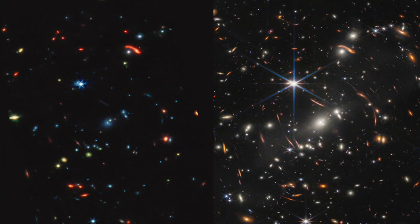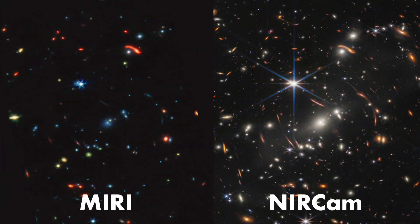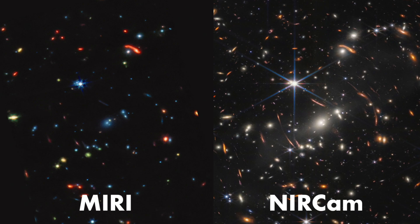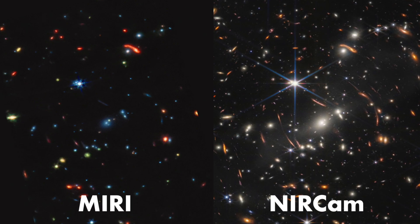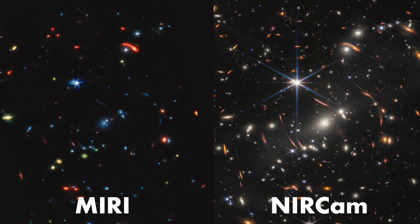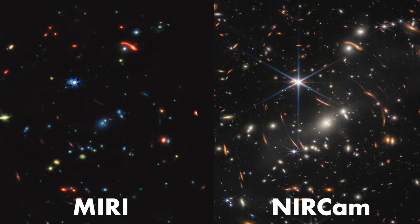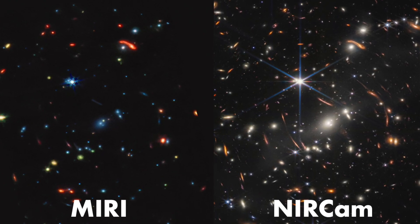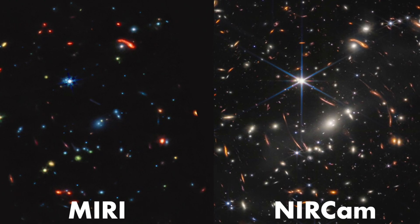JWST's mid-infrared instrument, aka MIRI, captured the image on the left, which covers a wavelength of 4.9 to 28.8 micrometers. This image allows us to see where the dust obscuring some of the galaxies resides.